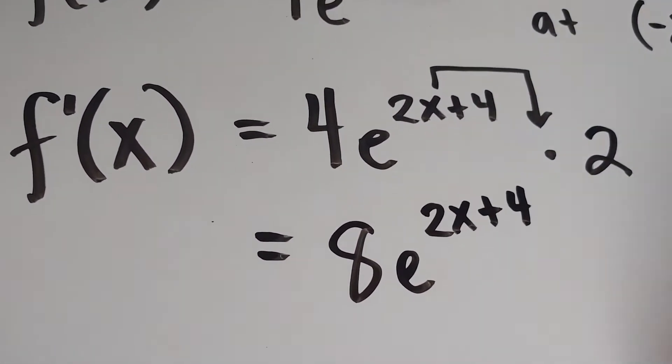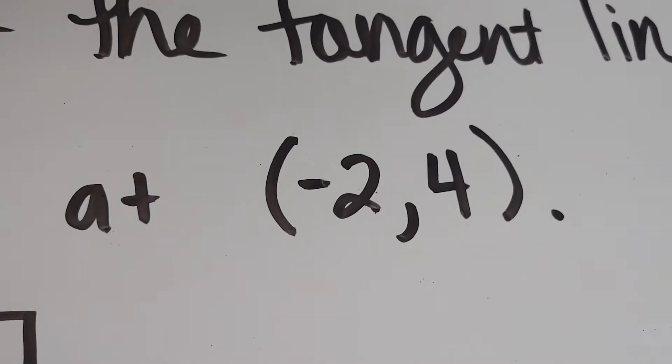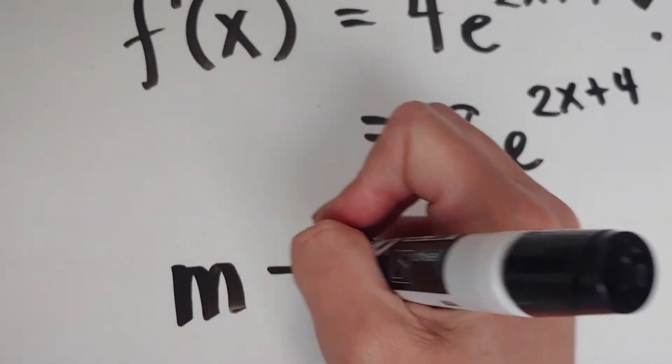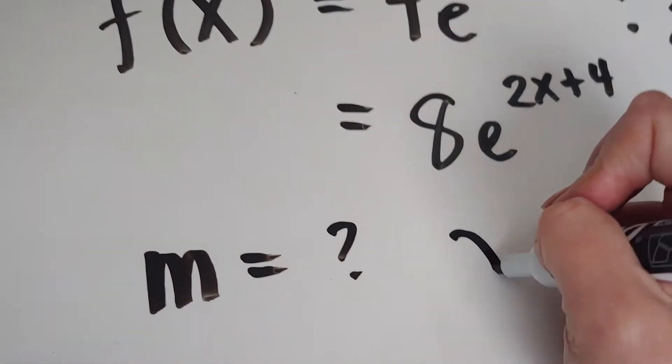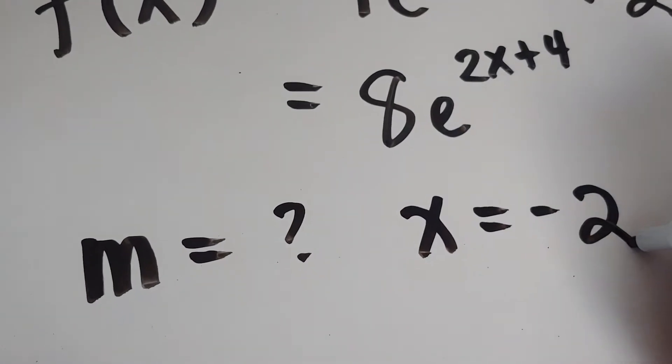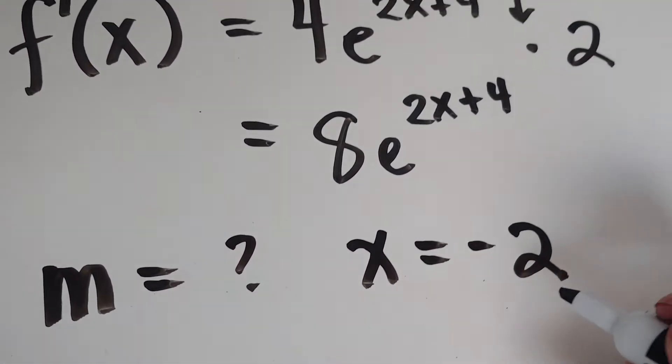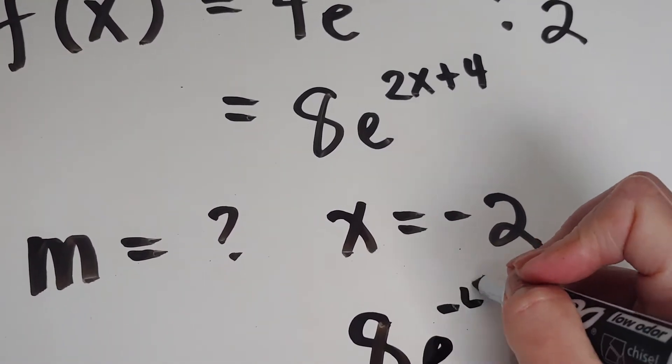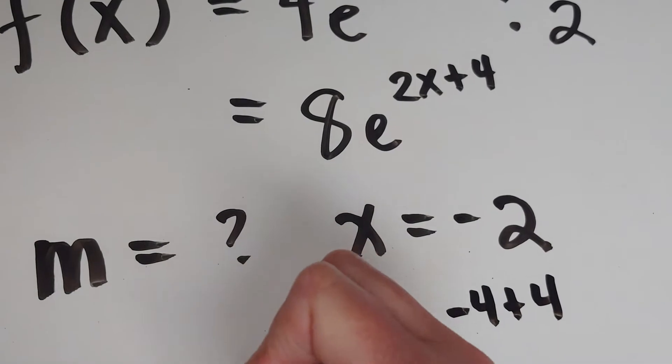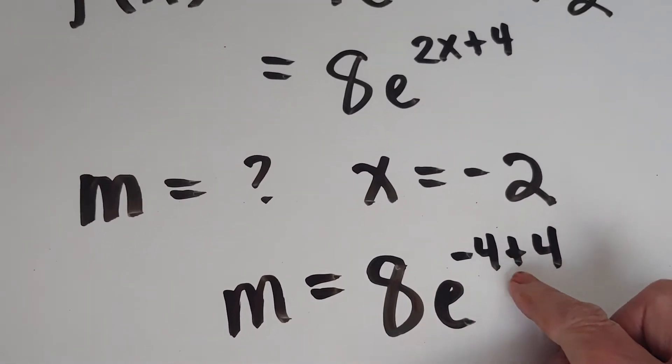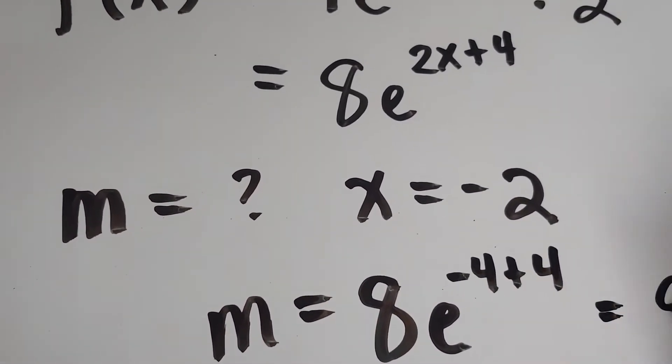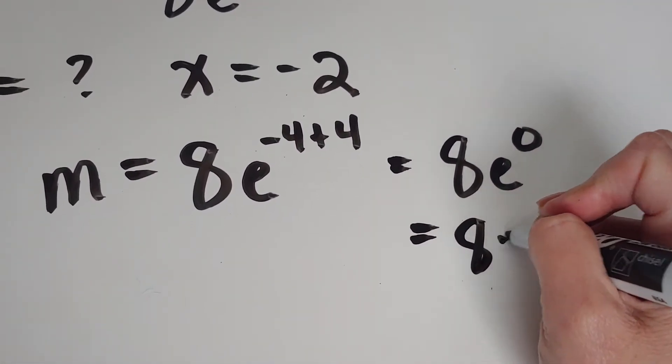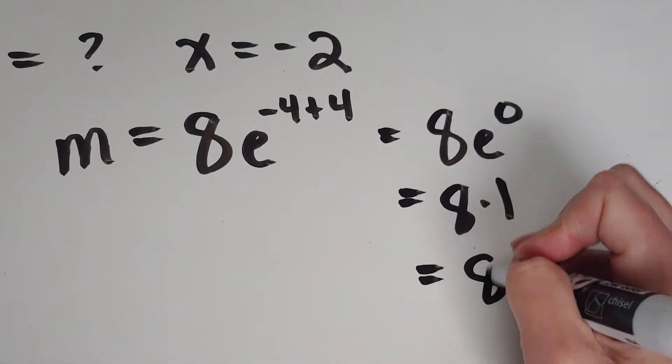Now to get my actual slope of the line, I need to use the x value of negative 2. So I'm going to plug in x equals negative 2. So when I plug in x equals negative 2, I'm going to get 8e to the negative 4 plus 4. Negative 4 plus 4 is 0. Anything to the 0 is 1. So my slope is the number 8.